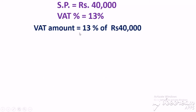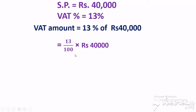VAT amount equals 13% of Rs. 40,000. By cancelling the zeros, the remaining calculation is 13 × 400, which equals Rs. 5,200. This is the VAT amount.